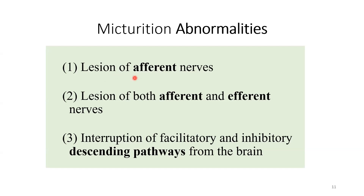The lesions will be on three lines. Scenario one: what if the afferents are cut? Scenario two: what if both afferents and efferents are cut? And three: the reflex arc — the basic spinal segmental arc — is intact, but the descending pathways are severed. Any lesion completely transecting the spinal cord above the sacral region will interrupt those facilitatory and inhibitory signals coming down from the brain.